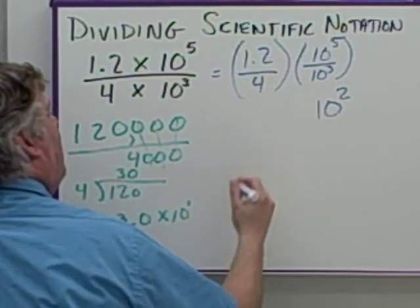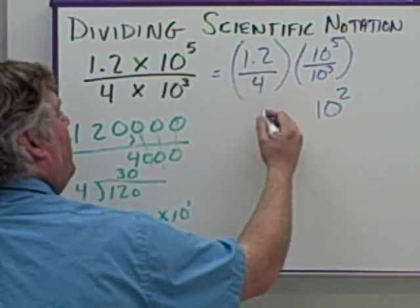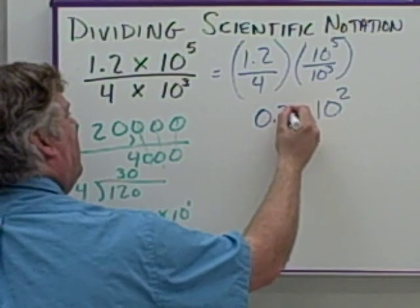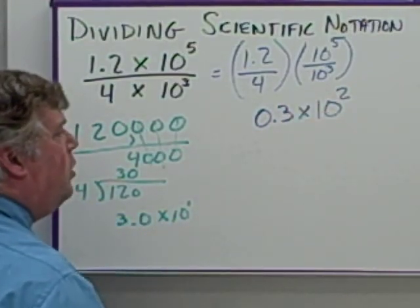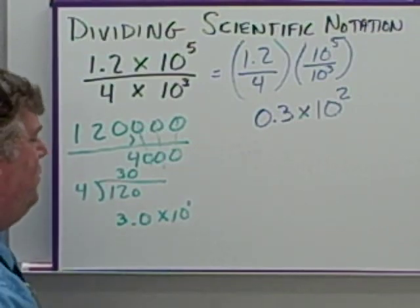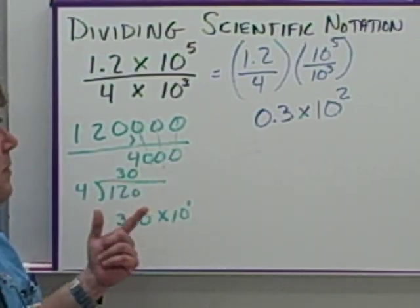1.2 divided by 4 is going to give me 0.3. So at this point, I have 0.3 times 10 to the 2.